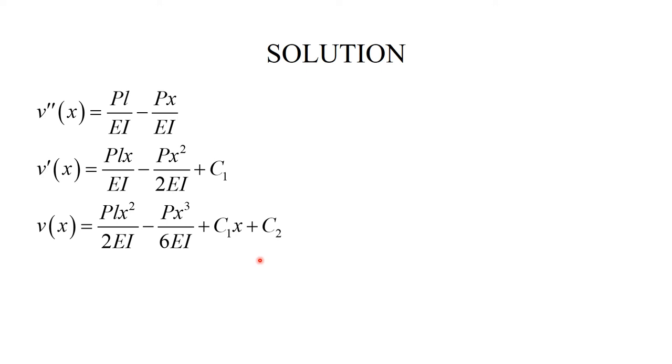Now I have the expressions for v and v prime. And I can simply impose boundary conditions, where I will claim that at x equal to zero, v must be equal to zero. So I substitute x into this expression. I am only left with c2. So it tells me that c2 is equal to zero.